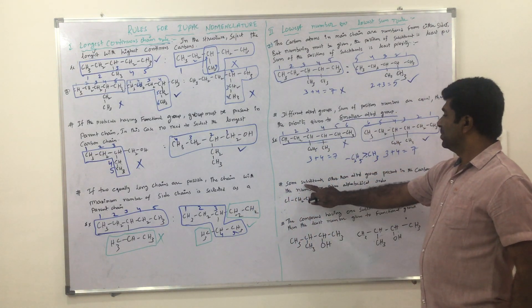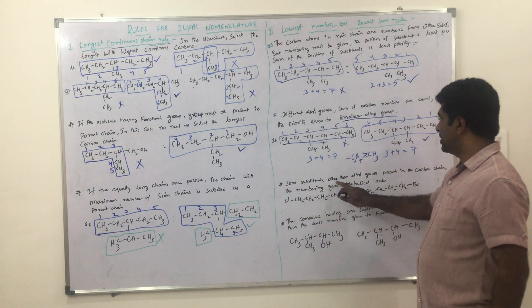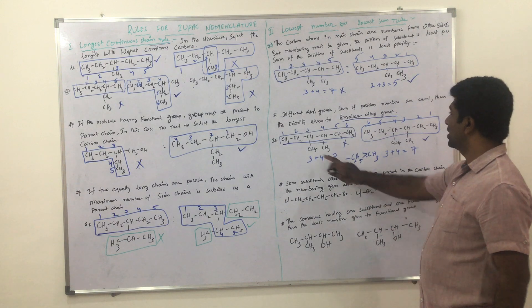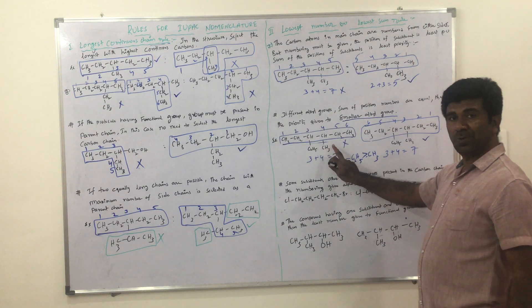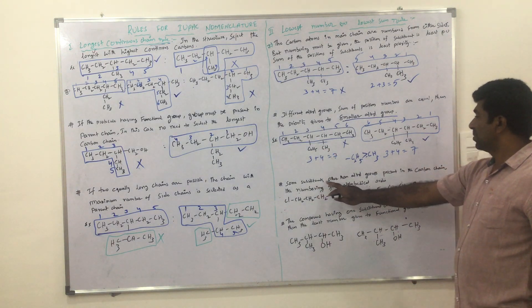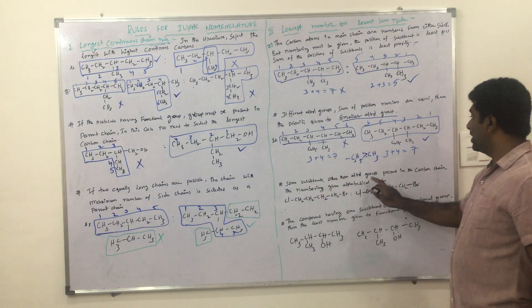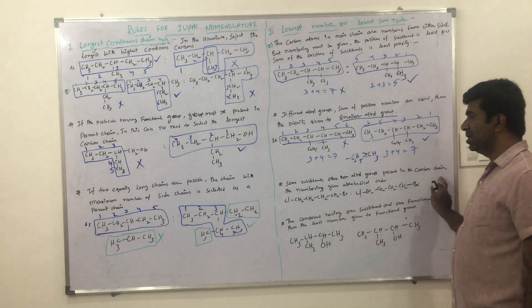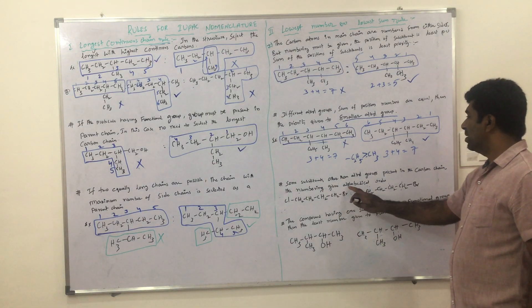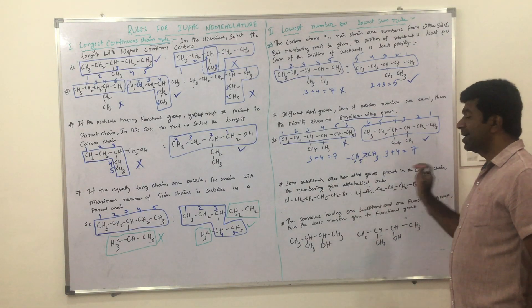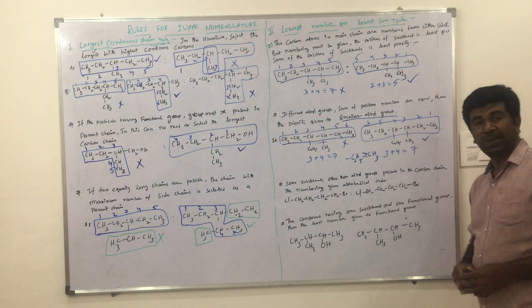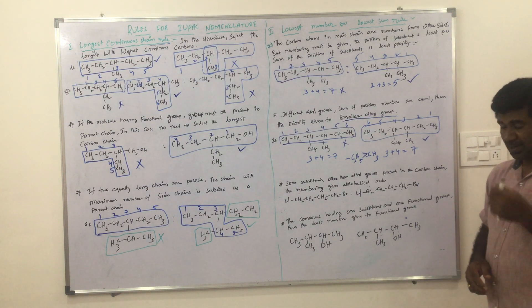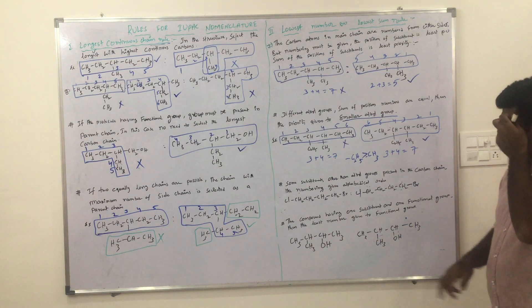Next, some substituents other than alkyl groups. Previously only alkyl groups were present; now we look at some substituents other than alkyl groups present in the carbon chain. The numbering is given in alphabetical order.